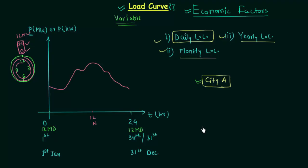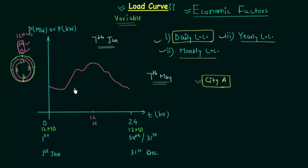Now let us understand what happens if we change the season. For example, if this plot is for 7th January (winter) and you plot the load curve for 7th May (summer), you will find a different plot. In summer you require air conditioners, coolers, and fans even while you sleep, whereas in winter you do not need those appliances. So the summer load curve will be higher during those sleeping hours because those appliances are running at your home and the power demand increases.